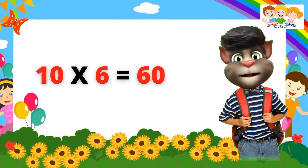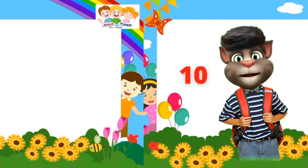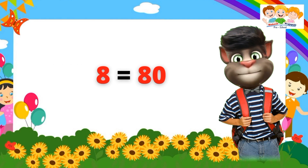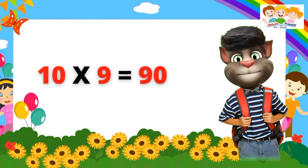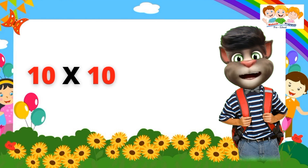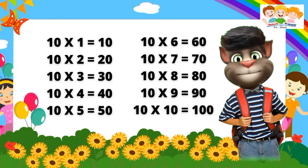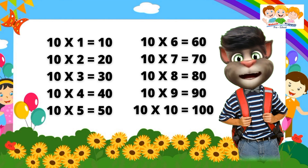Ten six's are sixty. Ten seven's are seventy. Ten eight's are eighty. Ten nine's are ninety. Ten ten's are one hundred. Ten one's are ten. Ten two's are twenty. Ten three's are thirty. Ten four's are forty. Ten five's are fifty. Ten six's are sixty. Ten seven's are seventy. Ten eight's are eighty. Ten nine's are ninety. Ten ten's are one hundred.